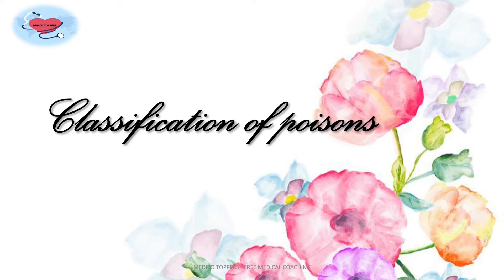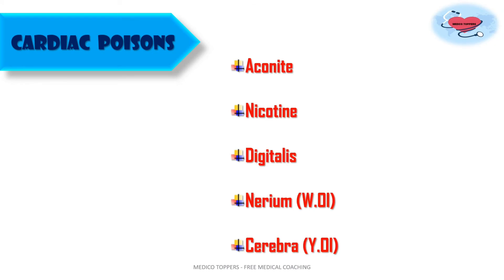Let's discuss some of the systemic poisons. Within systemic poisons, we start with cardiac poisons — this is important because you may get a question like 'which of the following does not come under cardiac poisons?' Cardiac or cardiovascular poisons include aconite, quinine, oleander, tobacco, and cyanides. More specifically: aconite, nicotine, digitalis, white oleander (Nerium odorum), and yellow oleander (Thevetia/Cerbera). Yellow oleander, white oleander, digitalis, aconite and nicotine are the most important cardiovascular poisons.